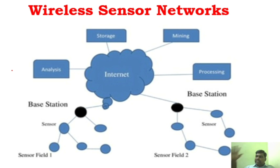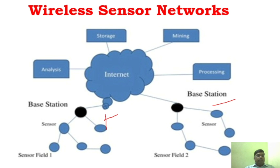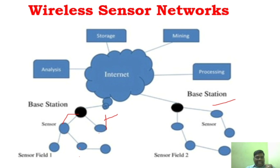Once the sensor network is created, you need to understand that the sensor not only sends information — it also has to communicate with each other node. This sensor communicates with all neighboring nodes, gets their data, fuses the data, and sends the information to the base station. So the sensor not only senses information; it gathers it, communicates it, processes it, and transmits it to the base station.